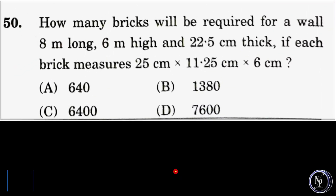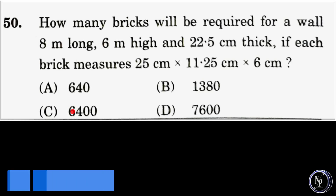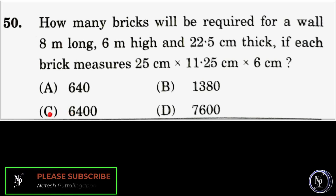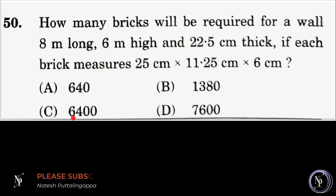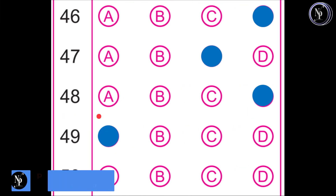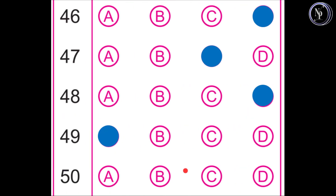Coming back to the question, in answer option C we have 6400. Let us mark it on the OMR answer sheet. So we mark answer option C as the correct answer for question number 50.